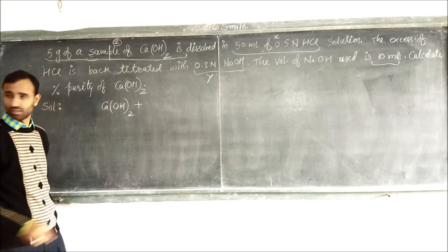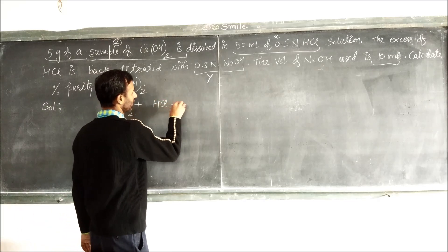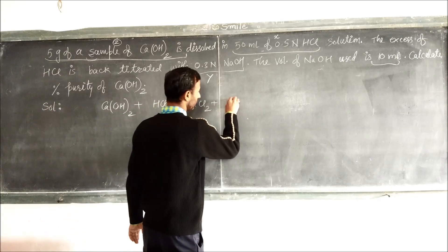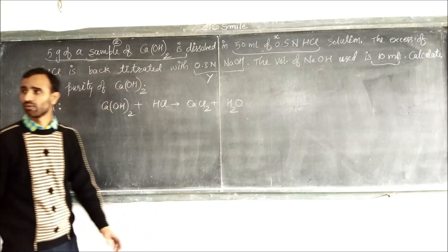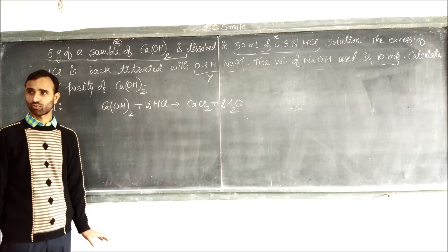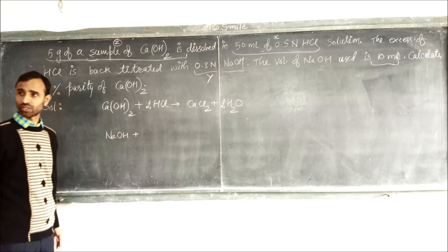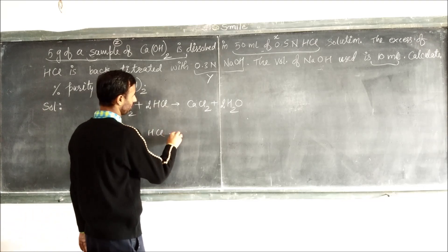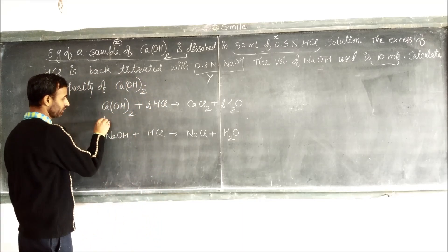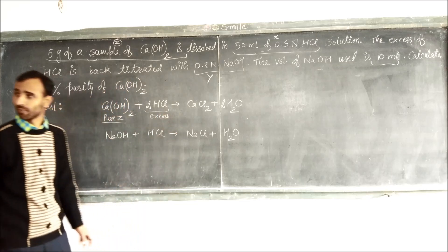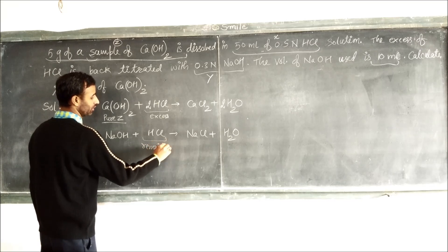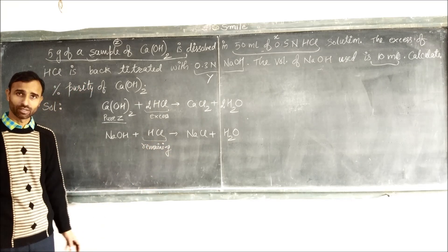So let us start the solution. First part is calcium hydroxide reacts with HCl, we get CaCl2 and H2O. This is the first equation. And then NaOH reacts with HCl to give NaCl and H2O.